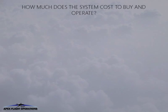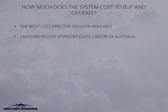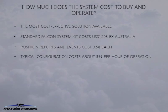The Falcon system is easily the most cost-effective automated flight information solution available. From our offices in Sydney, Australia, a standard kit costs only $1,295. Operational costs are the lowest anywhere — a position or event report costs only 3.5 cents, meaning that most aircraft operations cost only 35 cents per hour of operation. Different configurations of the reporting options can lower or raise this hourly cost depending on your preferences.